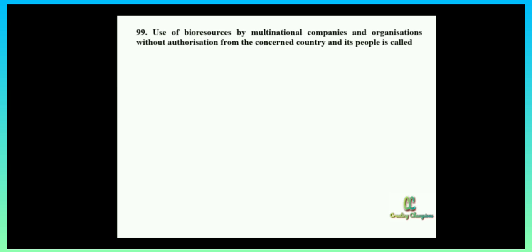Next question: the use of bio-resources by multinational companies and organizations without authorization from the concerned country and its people is called — option one: biodegradation; option two: biopiracy; option three: bio-infringement; option four: bio-exploitation. The wording of this sentence is directly given in your textbook.